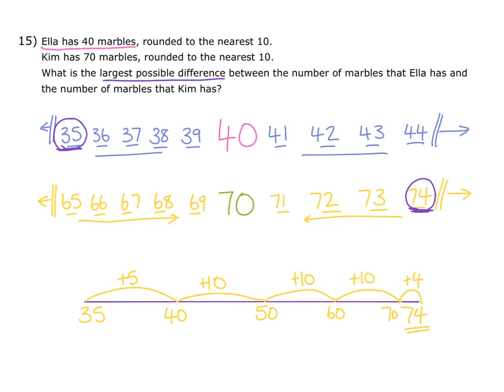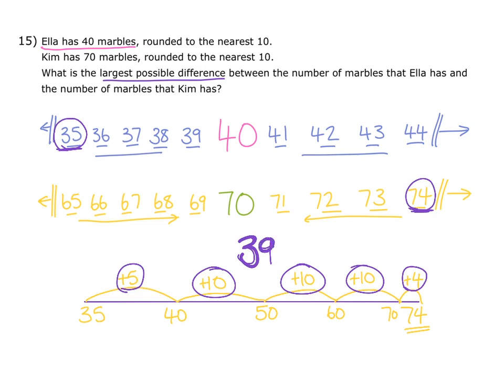So we'll count all the numbers together. We'll start with the 10s, as they're larger and easier to count: 10, 20, 30. Then we have 5 and 4, which add together to make 9. So all together, 39. This means the largest possible difference between the number of marbles that Ella has and the number of marbles that Kim has is 39.